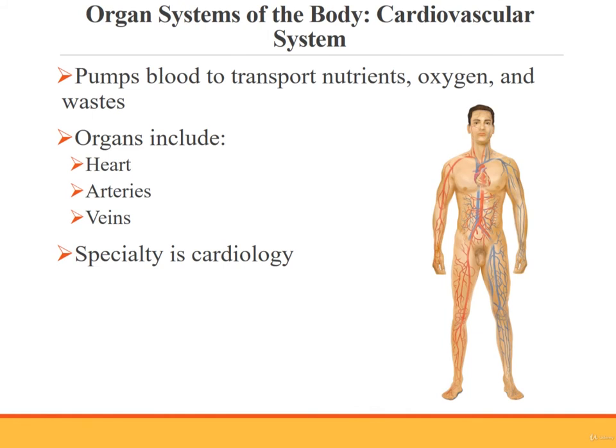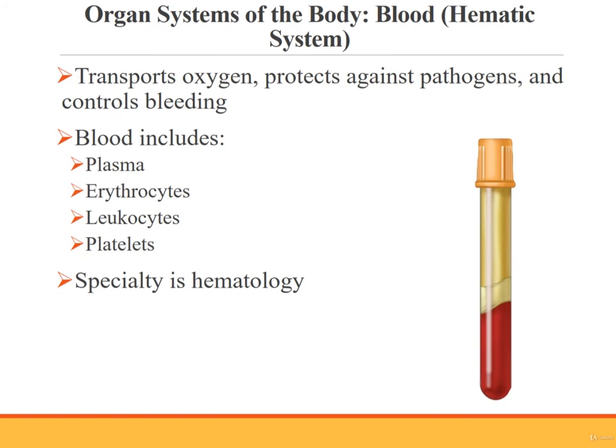The cardiovascular system pumps blood in order to transport nutrients, oxygen, and wastes within the body. The organs of the cardiovascular system are the heart, arteries, and veins. Cardiologists care for this system. The blood, or hematic system, transports oxygen, protects against pathogens, and controls bleeding. The blood is made up of plasma, erythrocytes, leukocytes, and platelets. Hematologists study the blood.